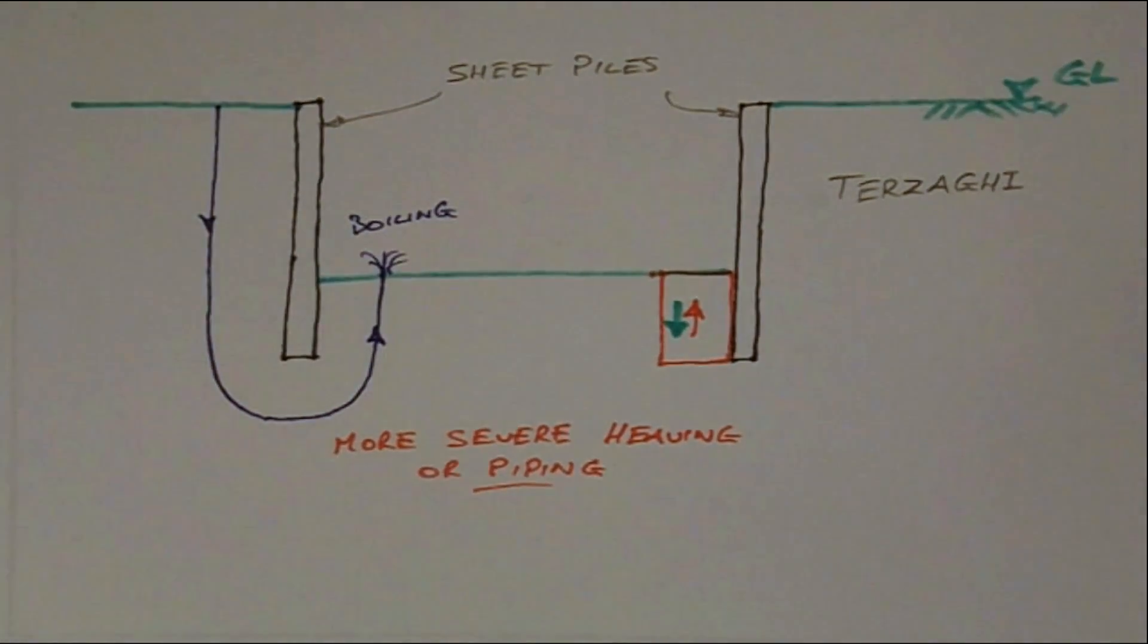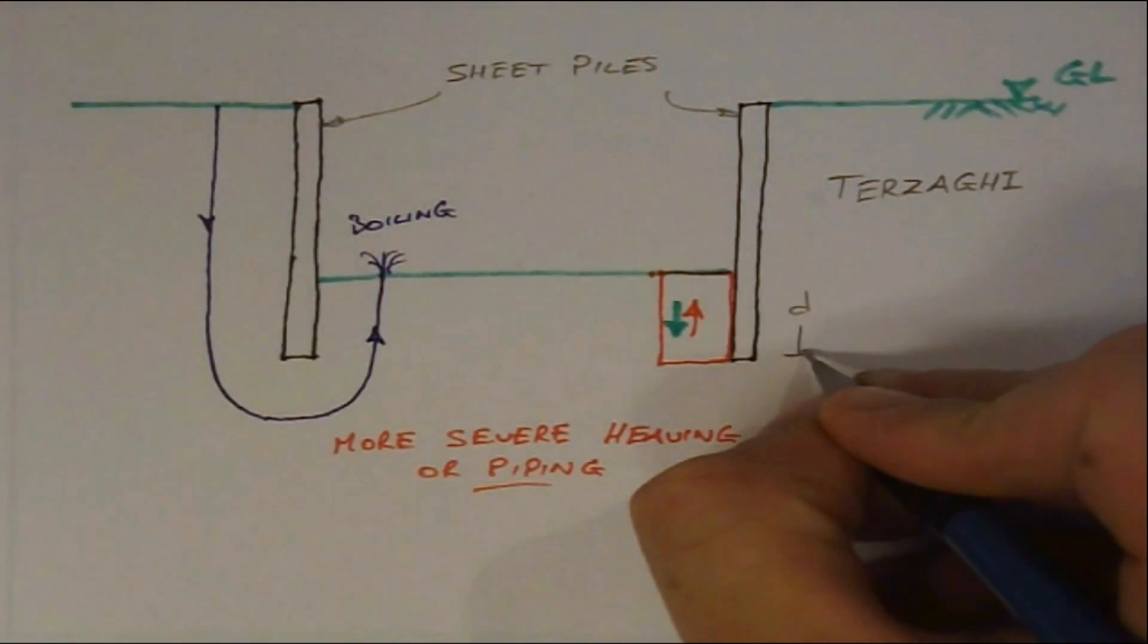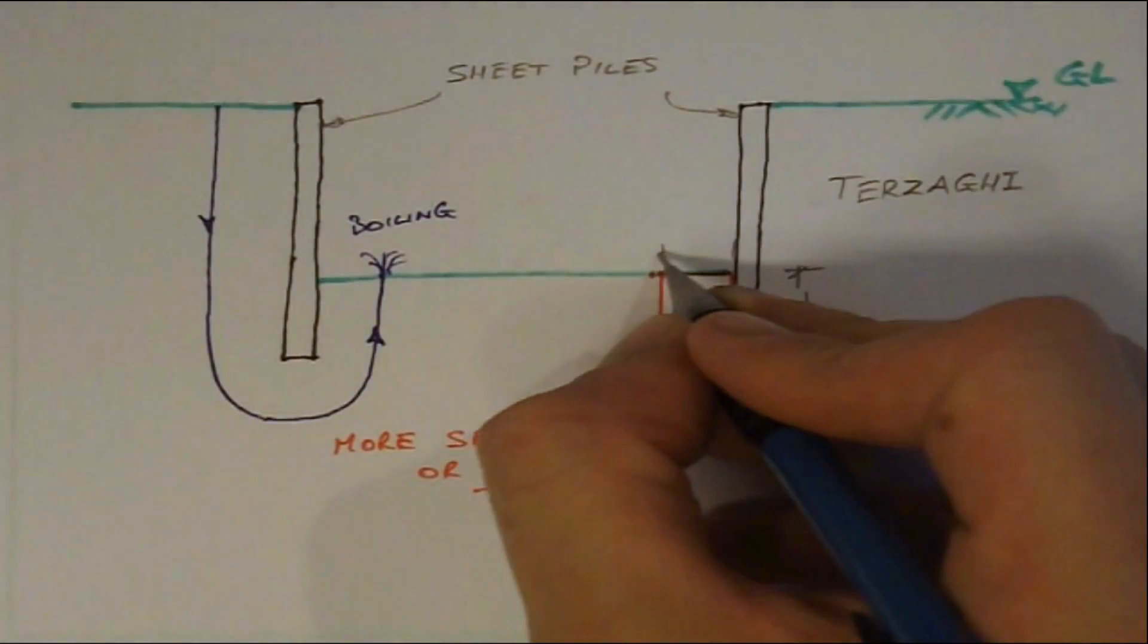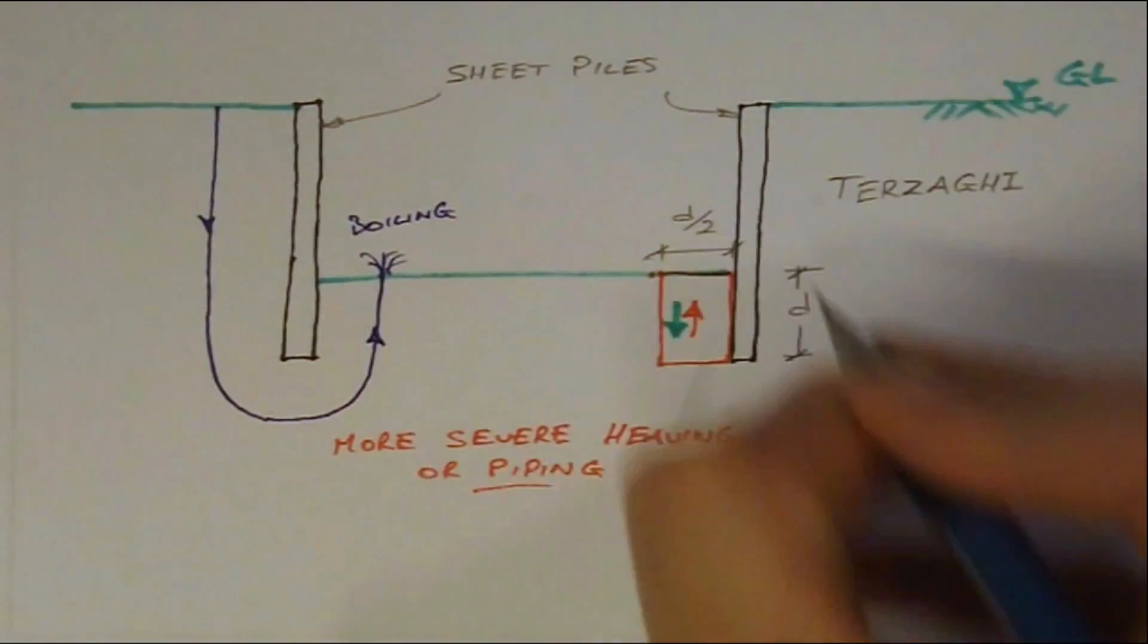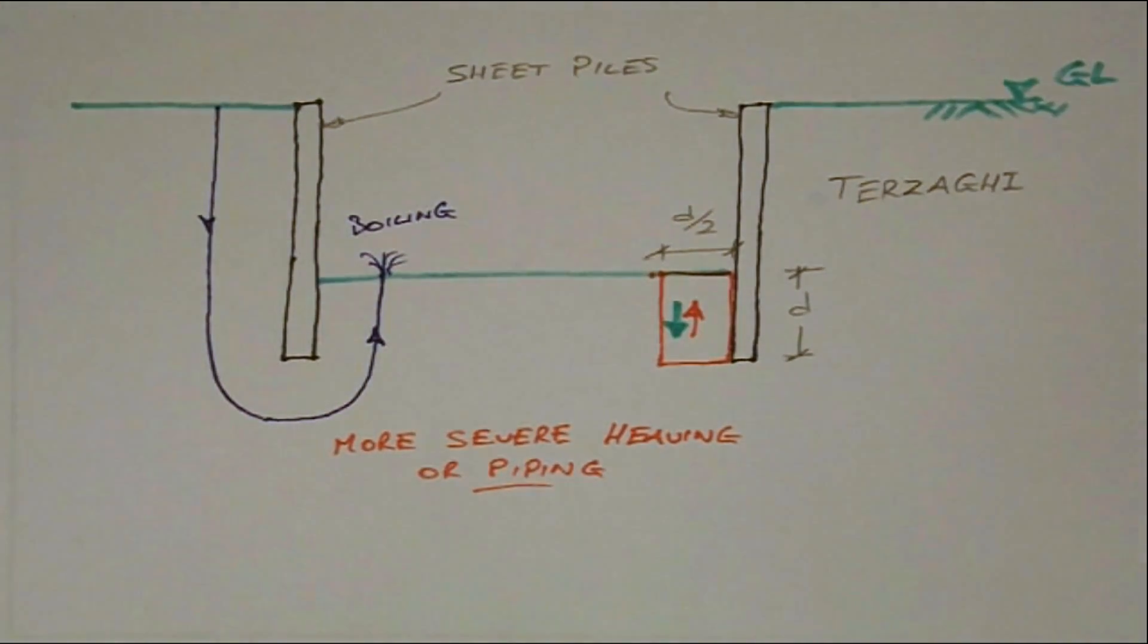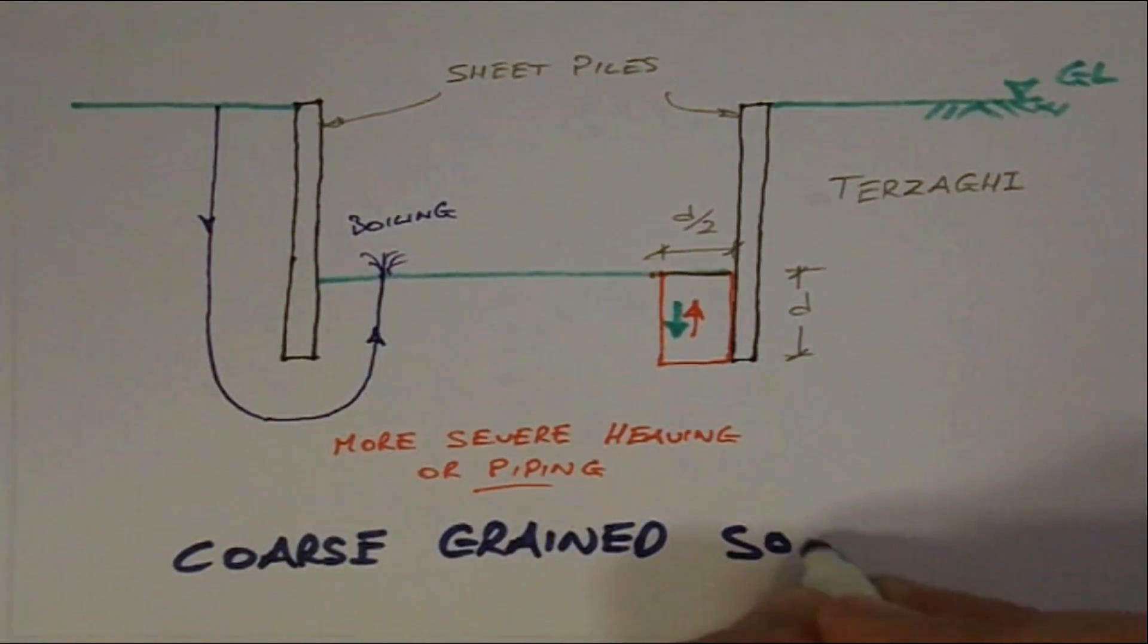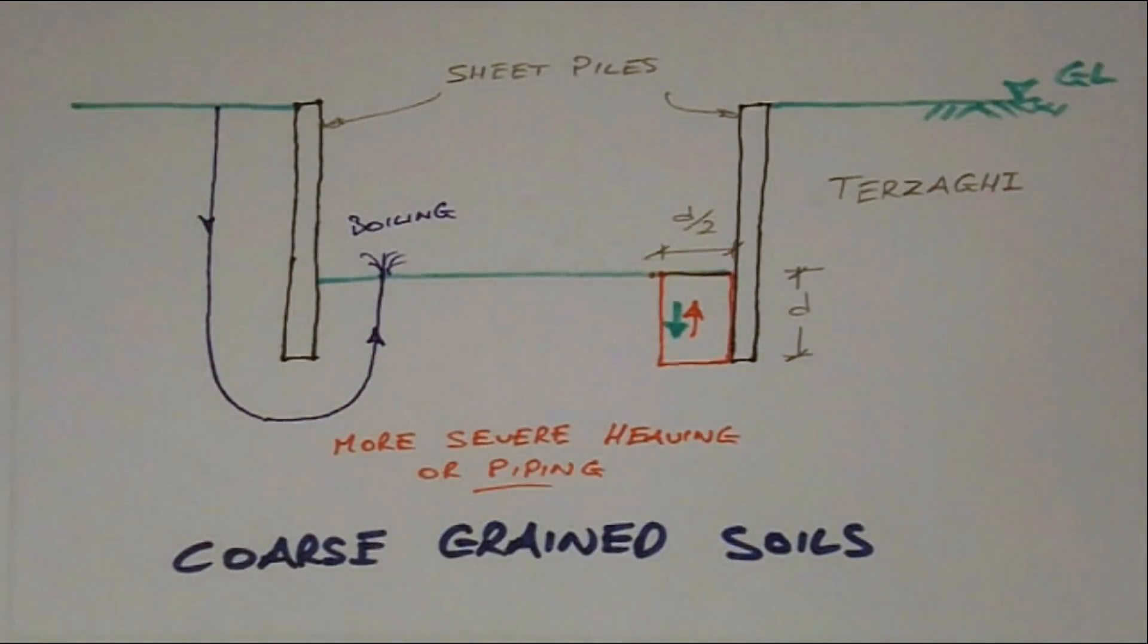Terzaghi has shown that the volume of soil involved in such movement is related to the depth of embedment D and normally extends to half the depth of embedment from the sheet pile wall. These calculations are normally associated with seepage through coarse grain soils and do not lead to very reliable results when applied to fine grain soils.